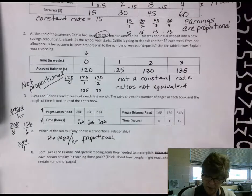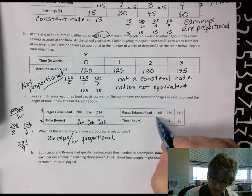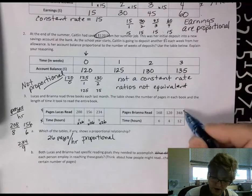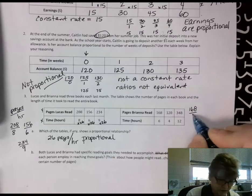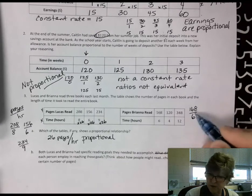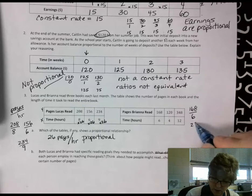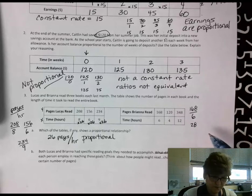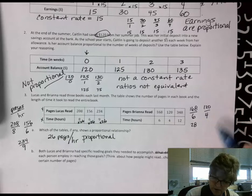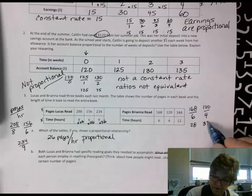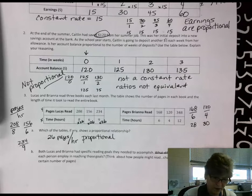If we look at Brianna, again setting up our ratio of pages read per hour, 168 over 6. And if you do that division, you come out with 28 pages read. And then 120 over 4 in four hours meant that I read at a rate of 30 pages per hour.